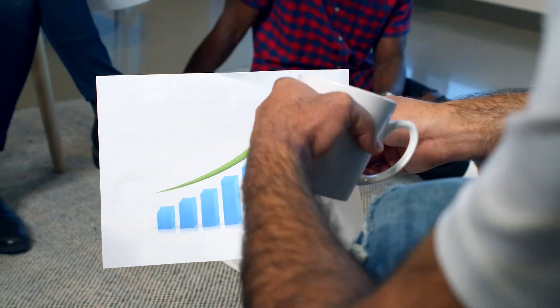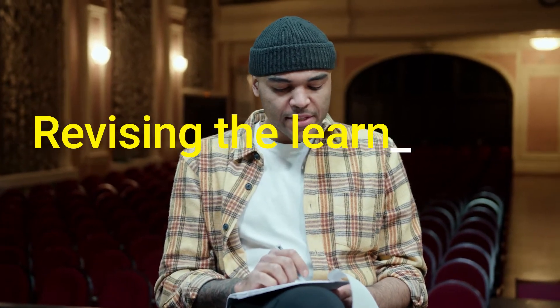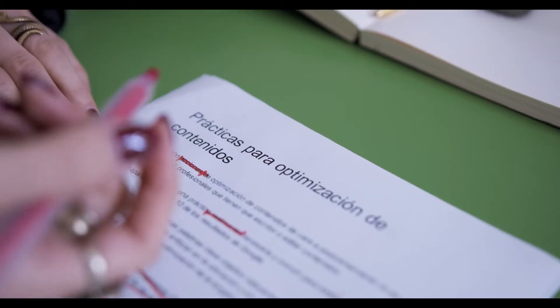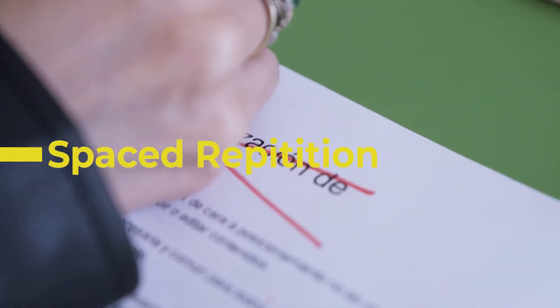So the first method is based on revising the learned information, but it's quite different from how we normally do revisions of our study material. The great thing about this method is we already know how to do it with a little tweak, of course. The method is known as the spaced repetition method.